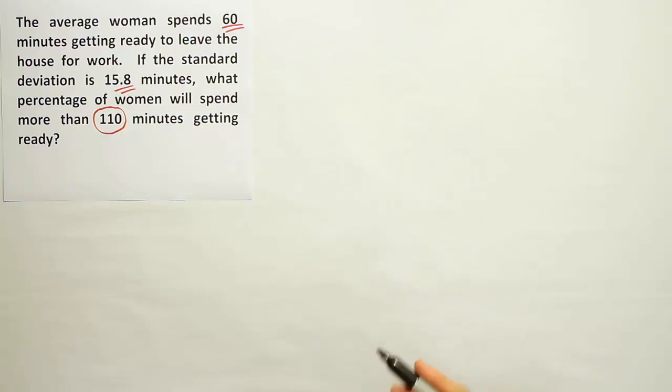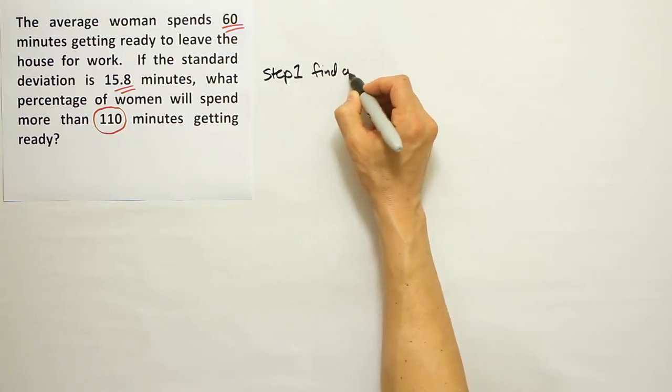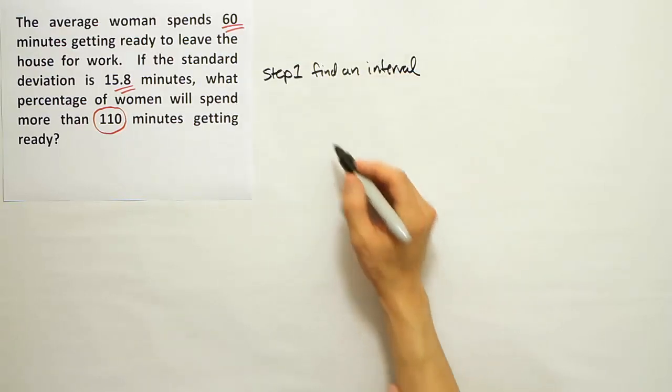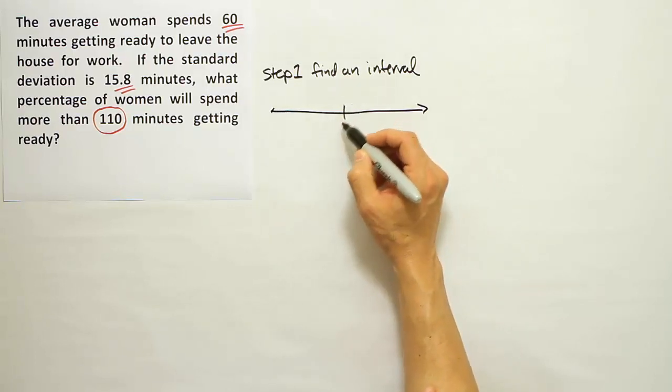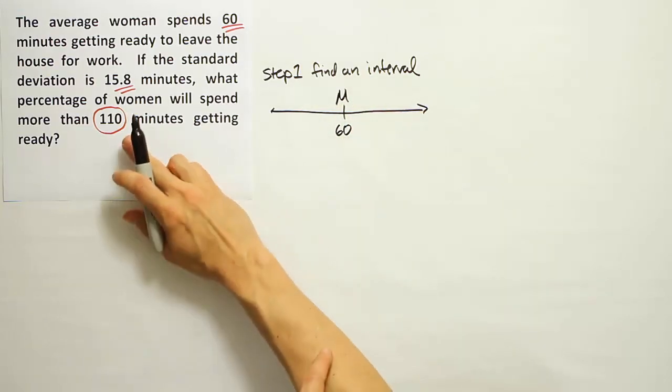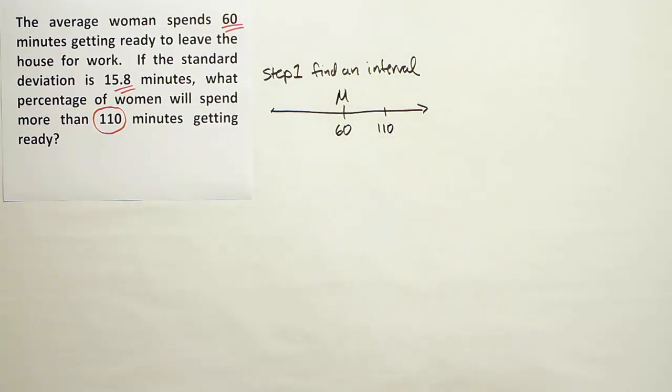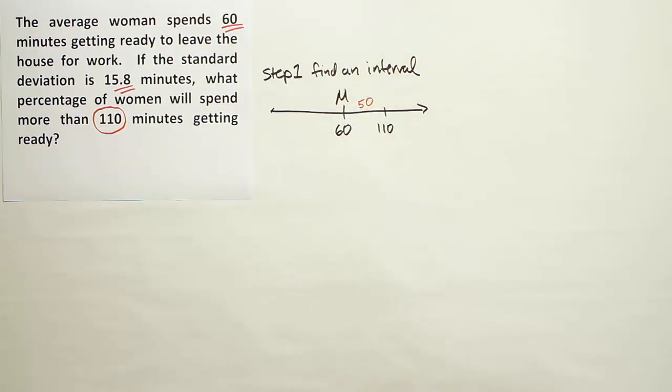The first step is to find an interval. You're going to create a number line and think about where your mean is located. Your mean is 60. Now relative to the mean, 110 is on the right-hand side. What we want to figure out is the difference between 110 and 60. If you subtract these two, you'll find the answer is 50. There's a space of 50 between 60 and 110.